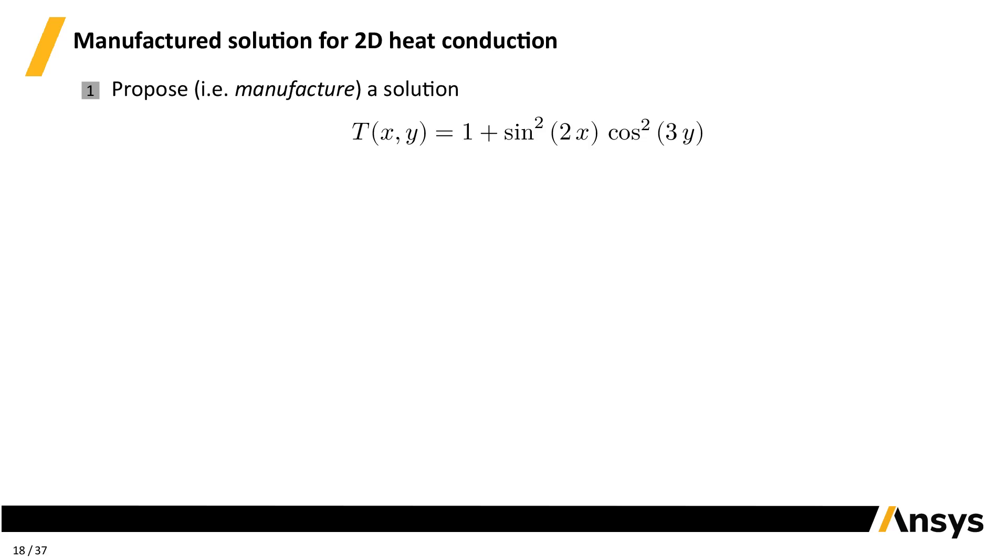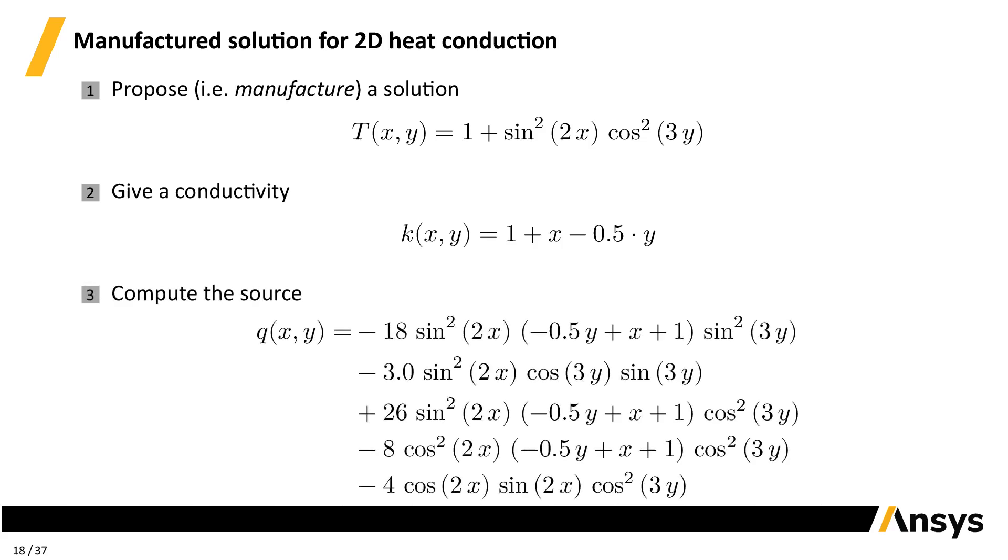Let's see how it works. To keep it simple, let's start with the 2D case first. Let's propose, that is to say manufacture, a solution for the problem. Since we are solving a partial differential equation over space in two dimensions, the solution is a function T that depends on both x and y. Say we propose this one. We also need an expression for the conductivity, like this. Then, the source we need is this guy. There we go. We'll also need natural boundary conditions, but we're good for now.